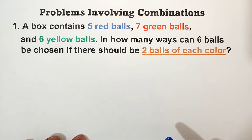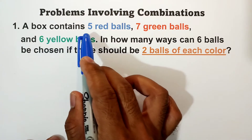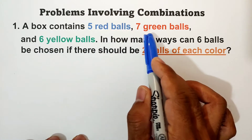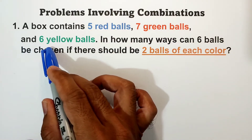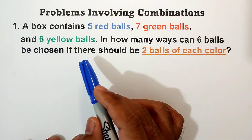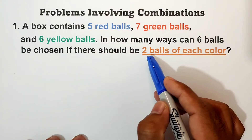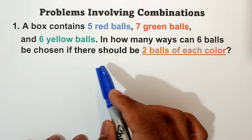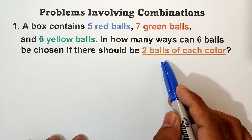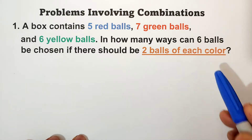Let us have item number one. A box contains five red balls, seven green balls, and six yellow balls. In how many ways can six balls be chosen if there should be two balls of each color?